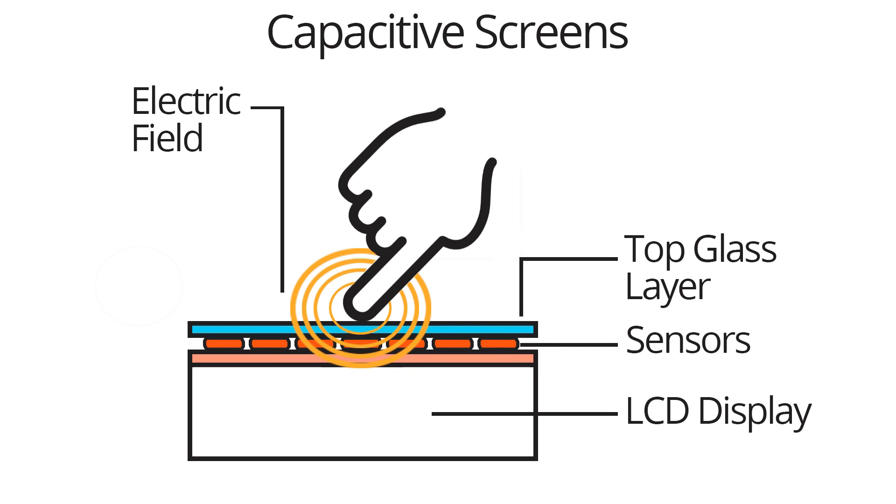When something conductive such as your finger touches the screen, a tiny electrical charge is transferred to your finger to complete the circuit, which creates a voltage drop at that point of the screen.